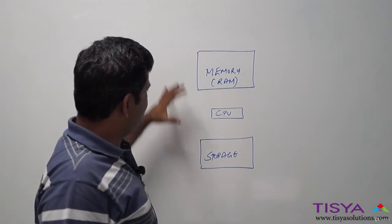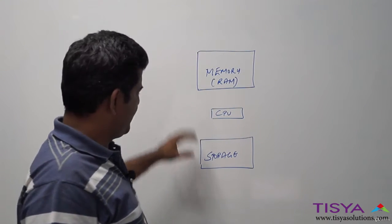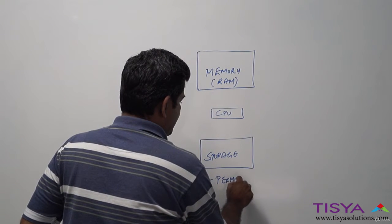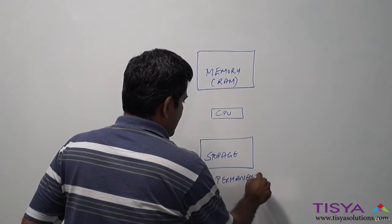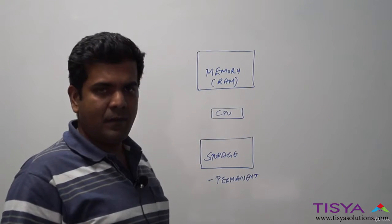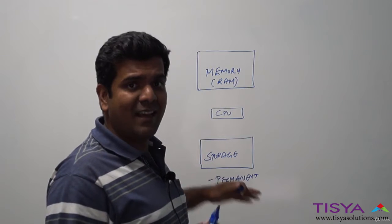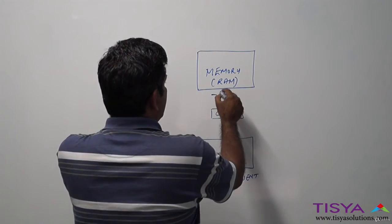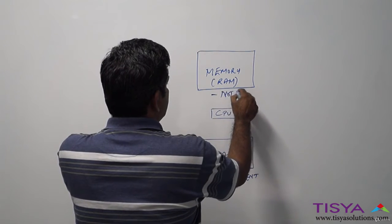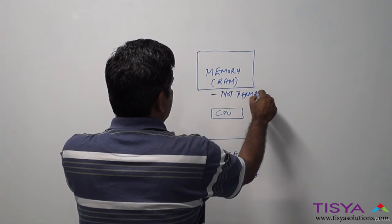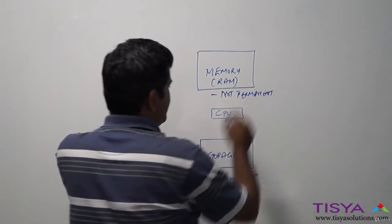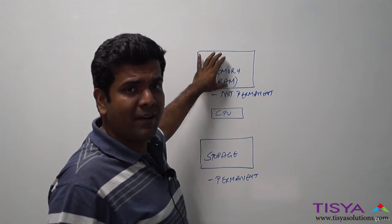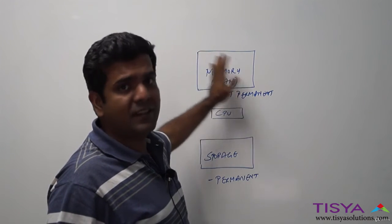What is the significant difference between these three? Storage is permanent, which means when you restart a computer, whatever is stored in the storage is available even after the reboot. Memory is not permanent, which means when you restart a computer, the contents in the RAM are going to be flushed out.